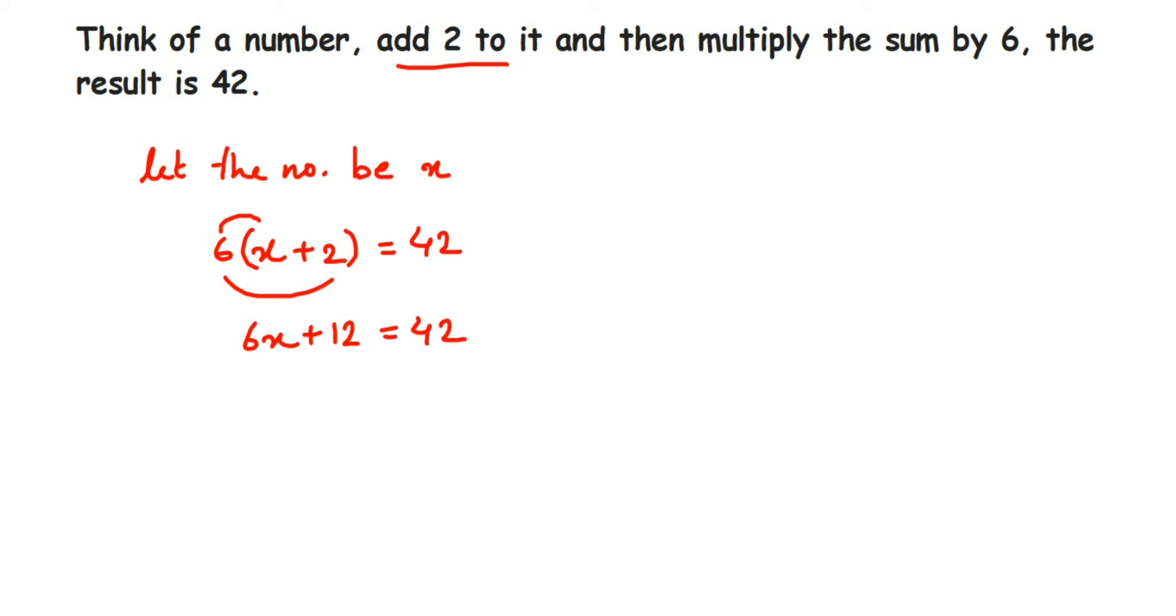Now I'm going to bring all the numbers to one side, so I'm going to transpose 12 to the other side. The sign will change - addition becomes subtraction. So 42 minus 12, which is 30, so 6x is equal to 30. Now we want only the value of x, so we're going to transpose 6 to the other side. Now 6 is in multiplication, so when you transpose it comes in division.